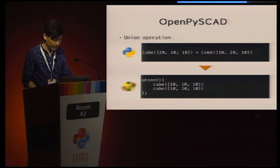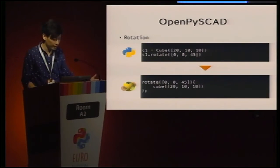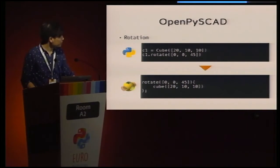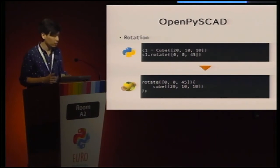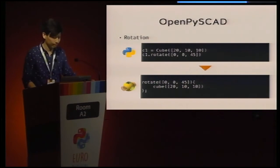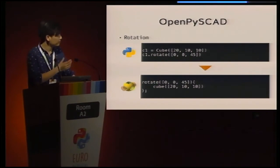The library is very intuitive. If you want to apply a union operation, you use the addition operator in Python, and the corresponding OpenSCAD code is generated. For a difference operation, you use the subtract operator. If you want to apply rotation, you create a cube object and call the rotate method on it. If you apply many types of methods — rotate, scale, transform, union, difference, intersection — the nesting level in OpenSCAD source code gets very deep, which is hard to maintain. This library helps you avoid that deep nesting problem.